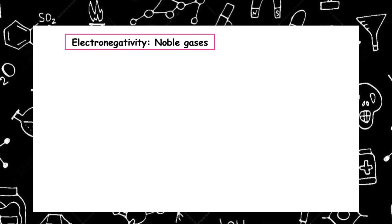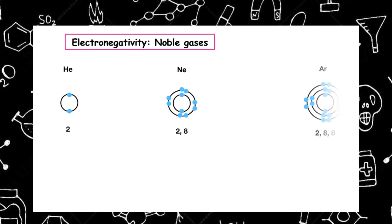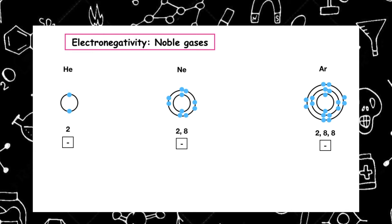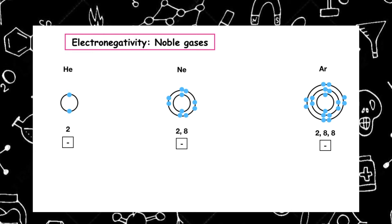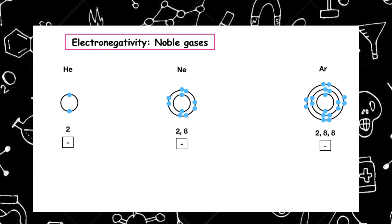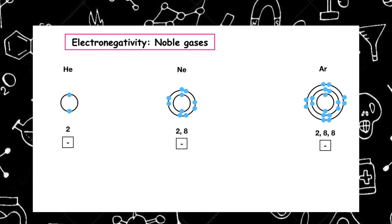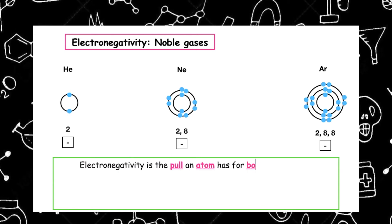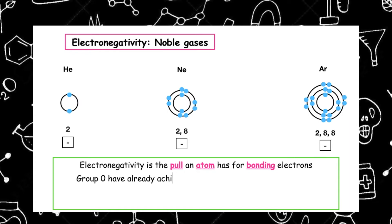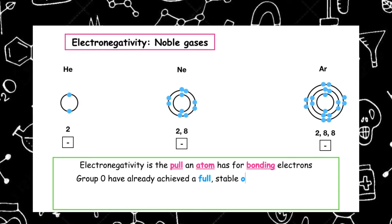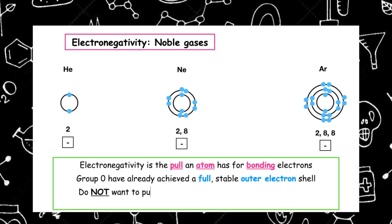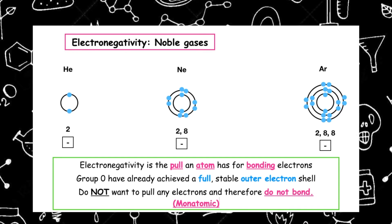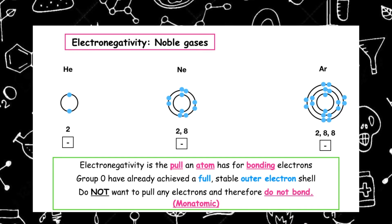The noble gases — the first three we're going to look at are helium, neon, and argon — actually do not have any electronegativity value in the data booklet. If we go on the definition, electronegativity is the pull an atom has for bonding electrons. Group zero elements have already achieved a full stable outer electron shell and do not want to pull any electrons, and therefore do not bond. The term we use to describe each of the noble gases is monatomic.